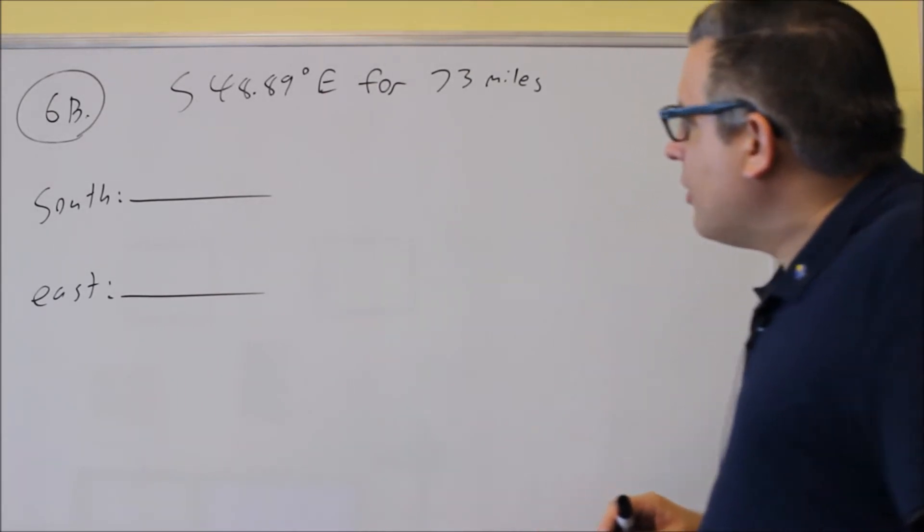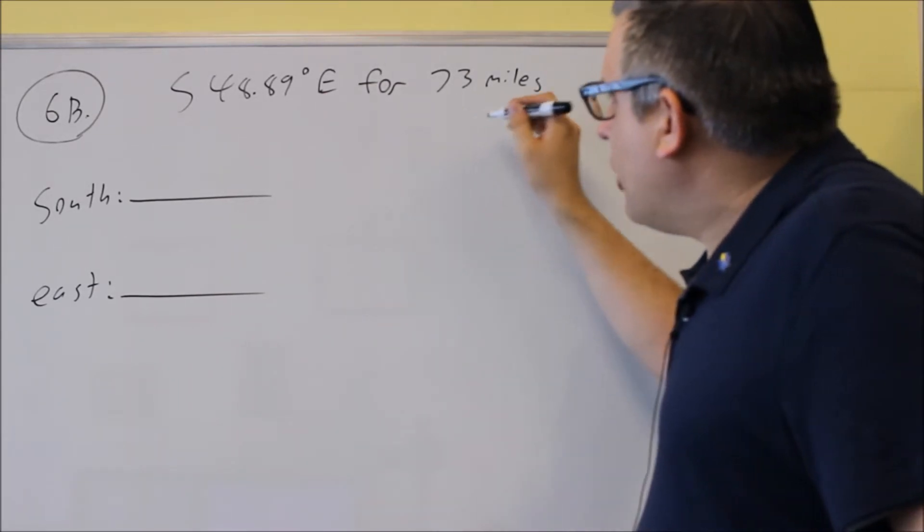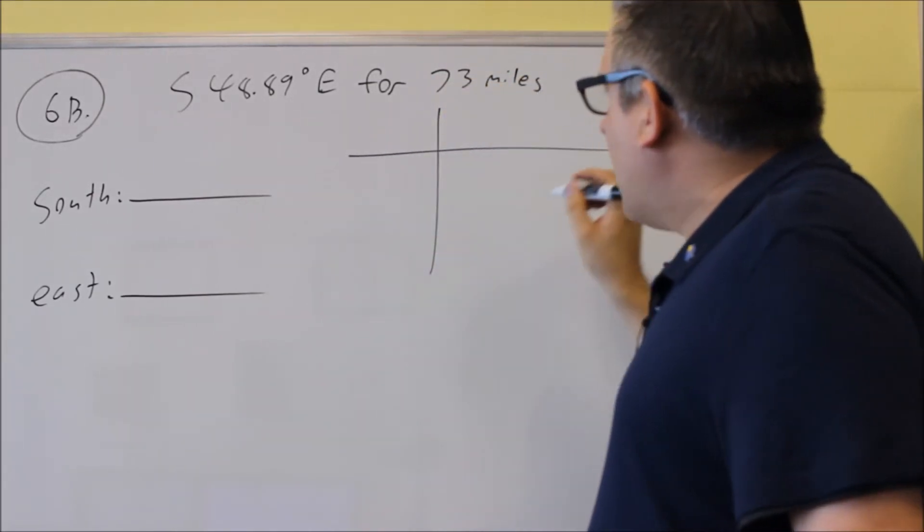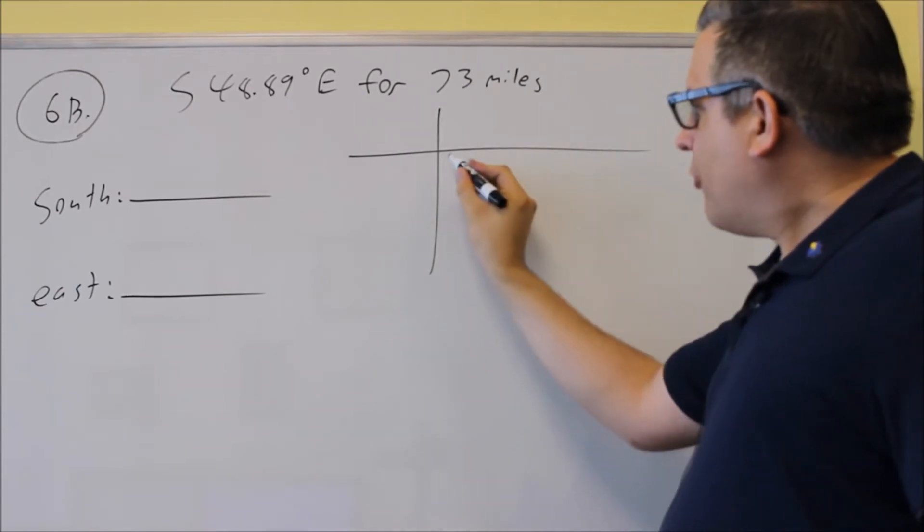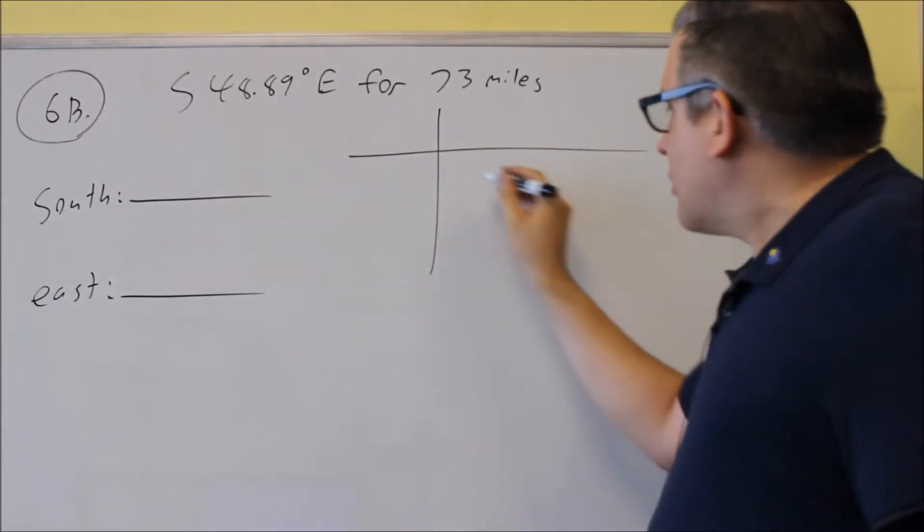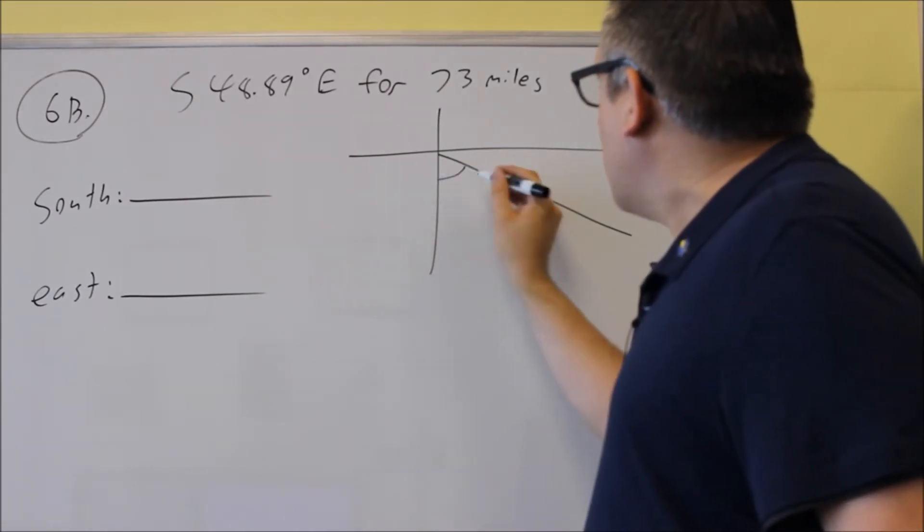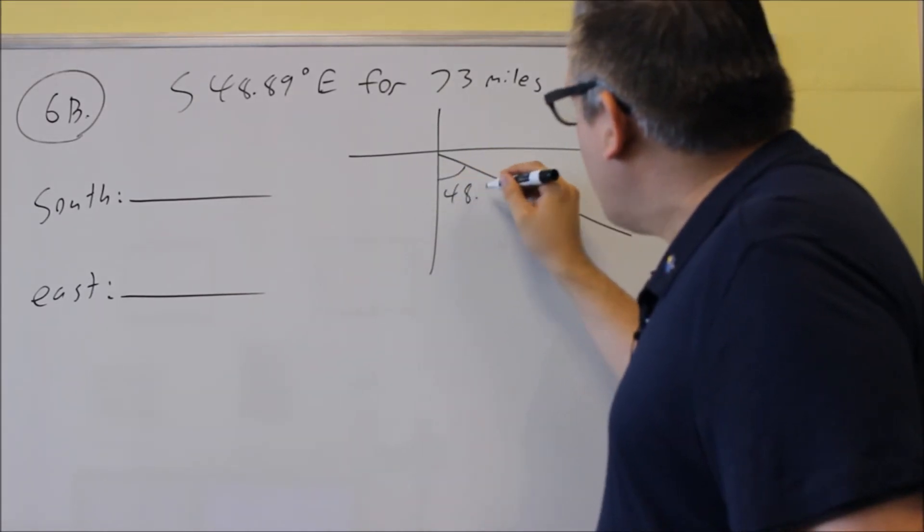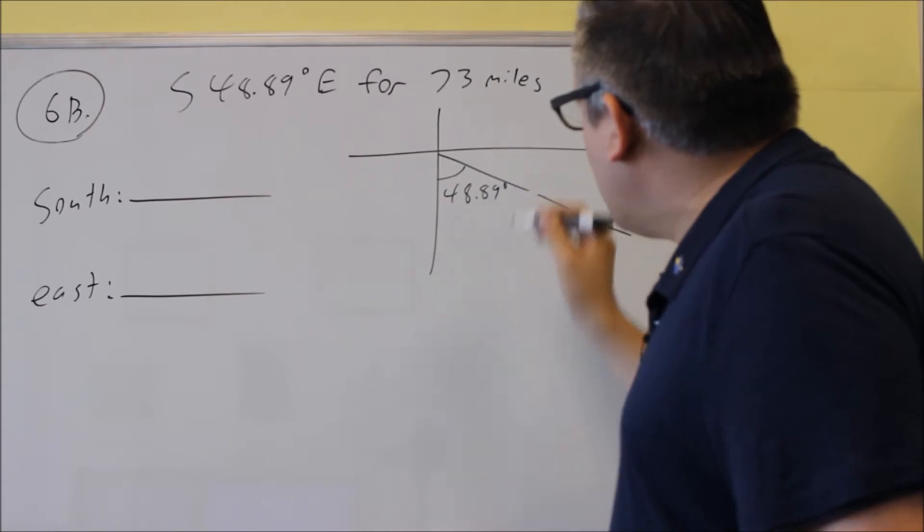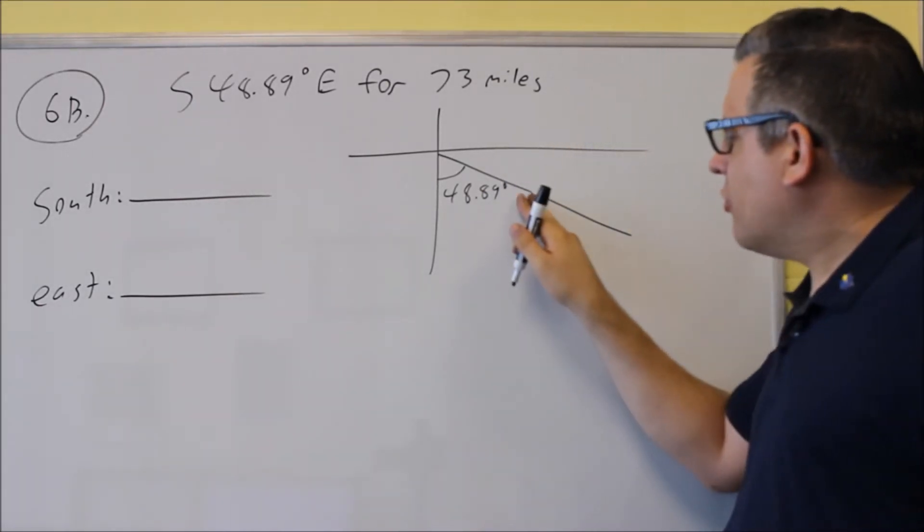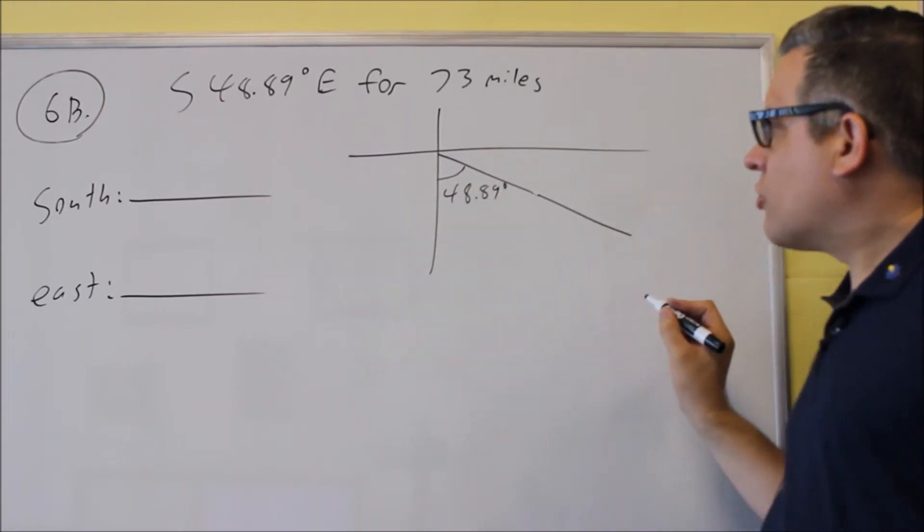Okay, so to begin with this, we have to draw a picture of what's going on. So we have south 48.89 degrees east, which means that you'll have something that looks like this. This angle here is 48.89 degrees. So that would be the bearing going in that direction.